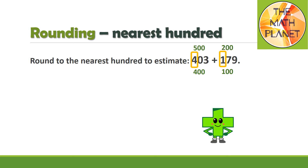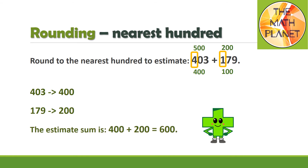Notice that the first addend is closer to the lower benchmark, so I will round 403 to 400. The second addend is closer to the upper benchmark, so I will round 179 up to 200. Now the estimate sum can be found by adding the two rounded numbers, so the estimate sum will be 400 plus 200 equals 600.